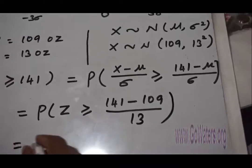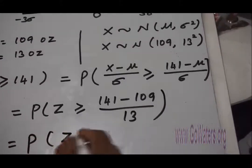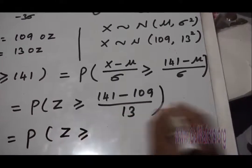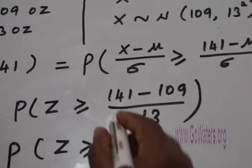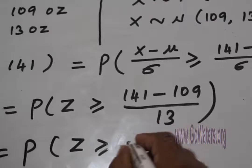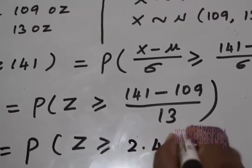So this equals the probability of Z greater than or equal to 2.46.